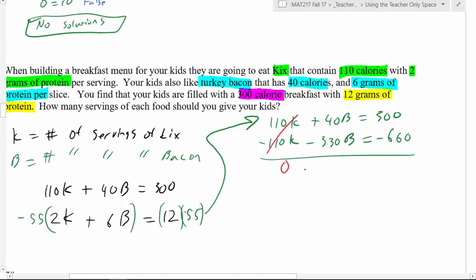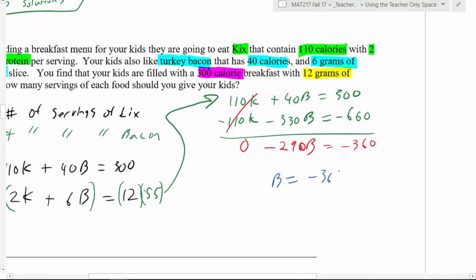And then negative 660 take away 300, so that'd be what, negative 360. So when I divide by negative 290, I'm gonna get a negative 360 divided by a negative 290, and that's a good sign because I can't have a negative serving of bacon, so this is a good sign. So that would leave me with 36 29ths.